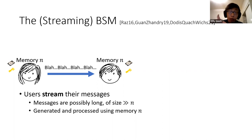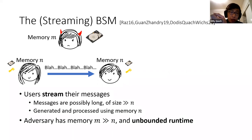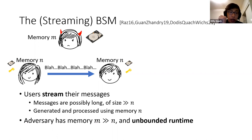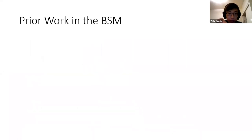To be more formal, we model our honest users as streaming algorithms, which formalizes the fact that honest users can generate messages that are way longer than what they can actually store themselves. They can stream messages, and the total length of the stream can be very, very large. The restriction is that generating that stream should be efficient — Alice and Bob should be able to do that using low memory. In terms of security, there's an adversary with much bigger memory, and that's the only restriction we put on the adversary.